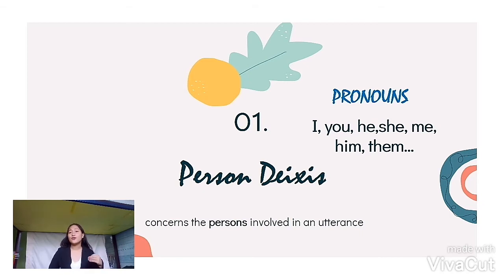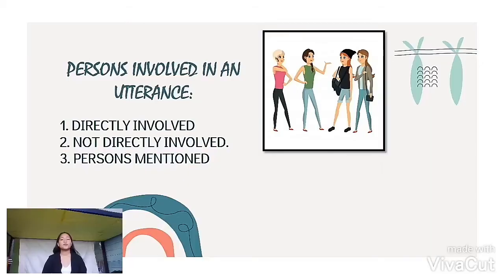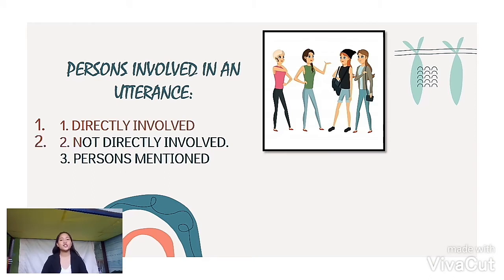So these are all pronouns. Person diaccess concerns the persons involved in an utterance, such as the persons directly involved — the example of this is the speaker and the addressee — the persons not directly involved, such as those who hear the utterance but are not being directly addressed, and also the persons mentioned in the utterance.